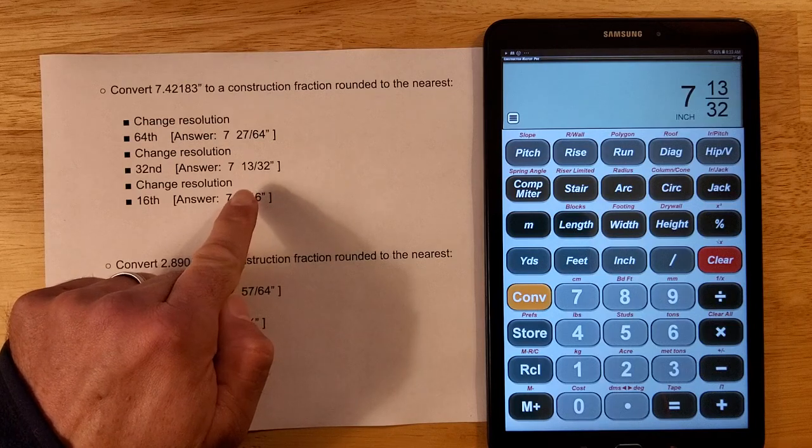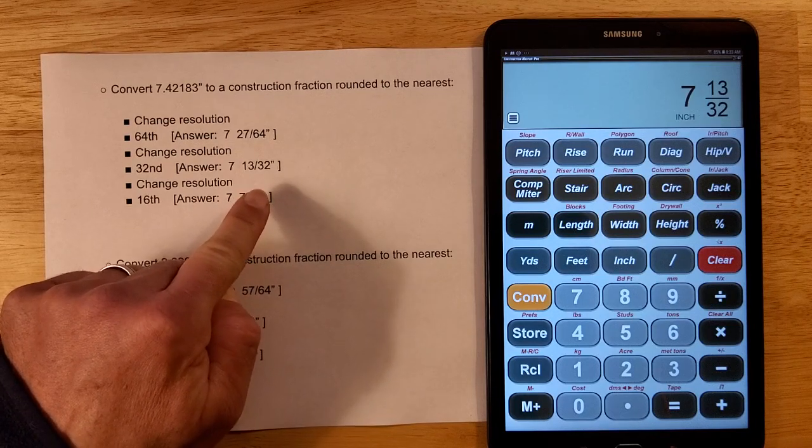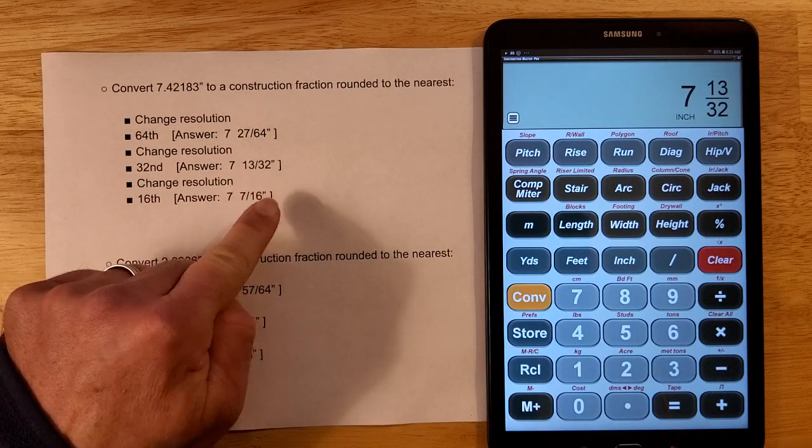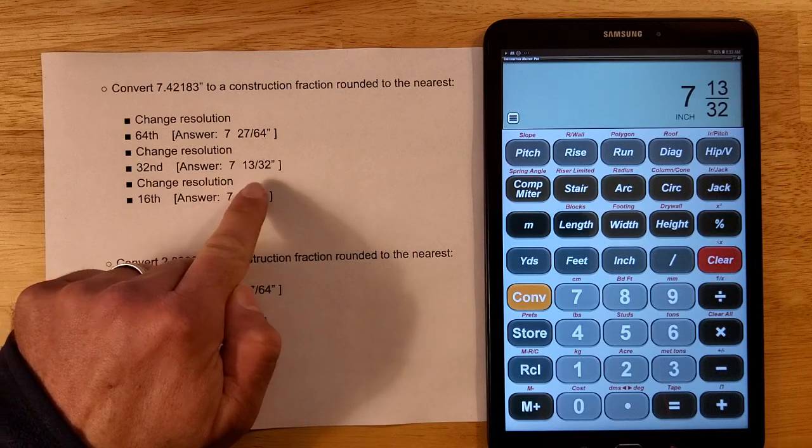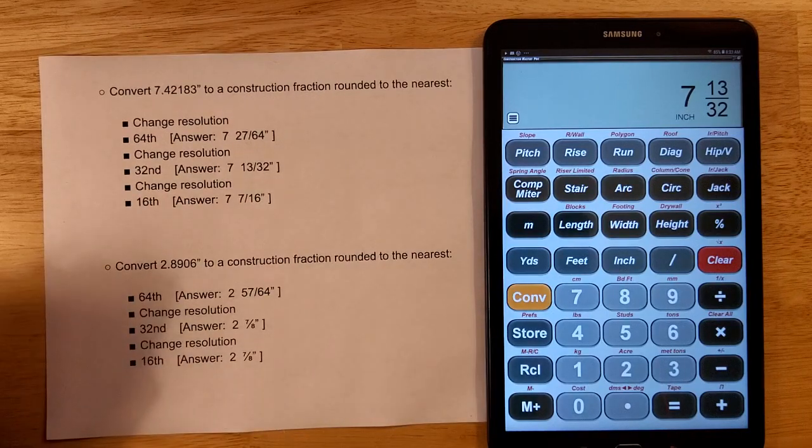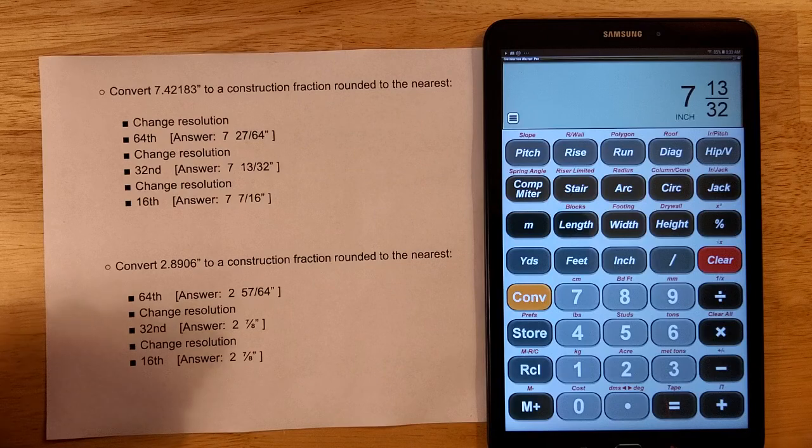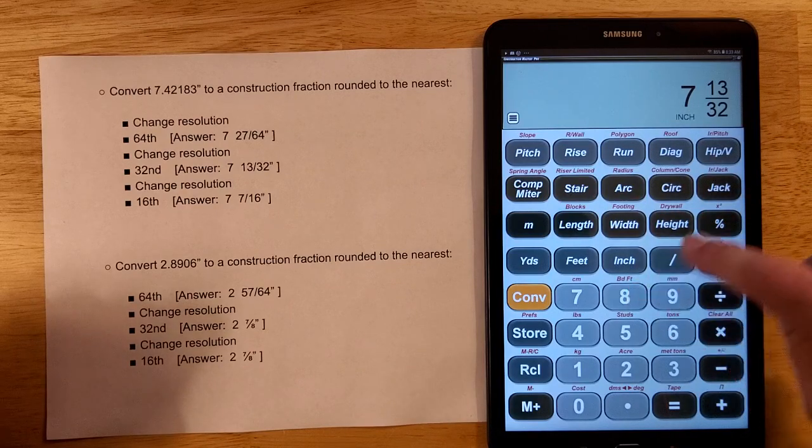Because thirty-seconds are less fine a measurement than sixty-fourths. So you're going to get a different resolution there. So seven and thirteen thirty-seconds is what you get at thirty-seconds when it's for that same measurement.